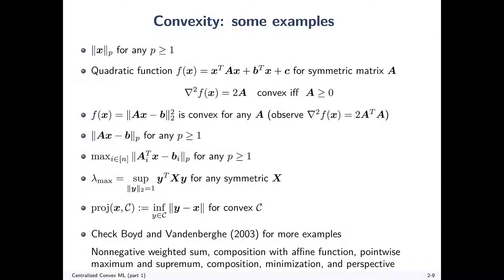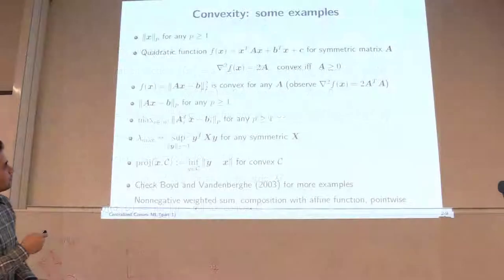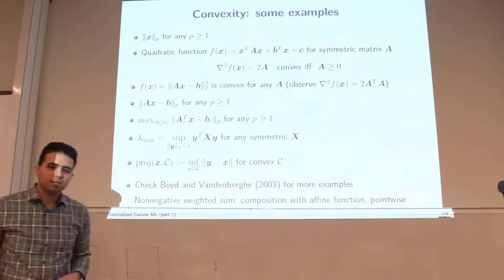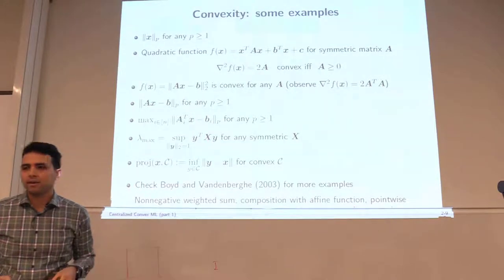Quadratic functions — you will see a lot of that, especially in empirical risk minimization and all over machine learning, where you have some form of loss functions that penalize the difference between labels and your predictions. The way you penalize that is with a quadratic objective function. In general, for some symmetric matrix A, this is clearly a quadratic function of x. If you take the second derivative, it's 2A. So it's convex if and only if A is positive semi-definite (PSD).